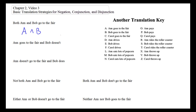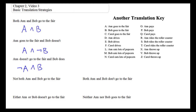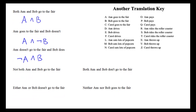Next, we can involve some negation. Ann goes to the fair and Bob doesn't. This is essentially the same as above, except that we negate the B for Bob doesn't go to the fair. And similarly, if we put the negation on the A, we would get a translation for: Ann doesn't go to the fair and Bob does. There are certain ways that conjunction and negation interact that we need to take a systematic look at.